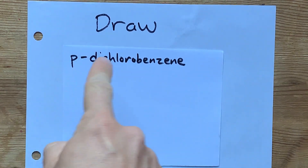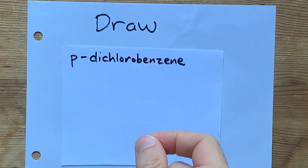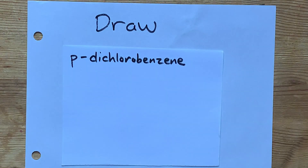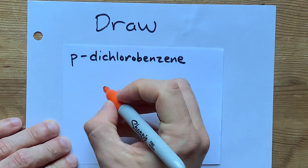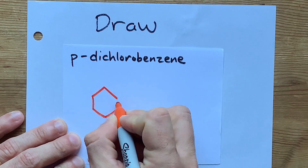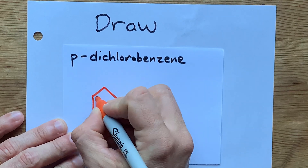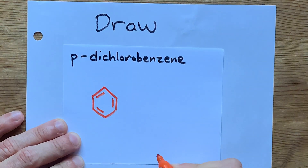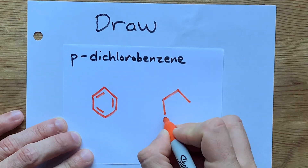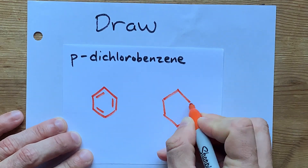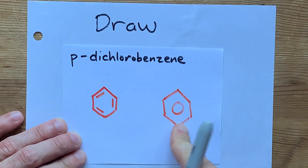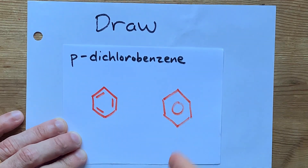We're going to draw P-dichlorobenzene. That P stands for para. We're going to start with the benzene, which is six carbons in a ring with alternating double and single bonds. Your teacher may allow you to draw a single circle on the inside — every chemist knows that is also benzene.